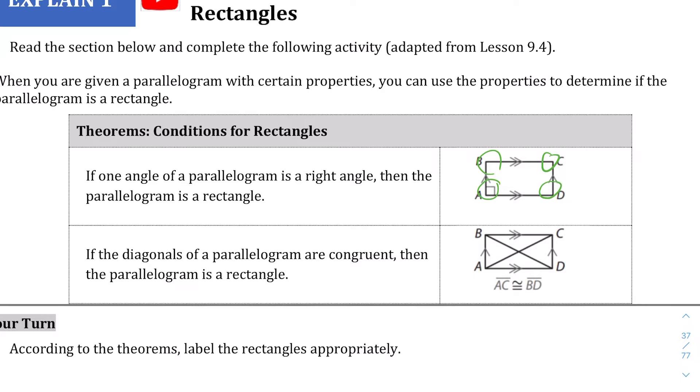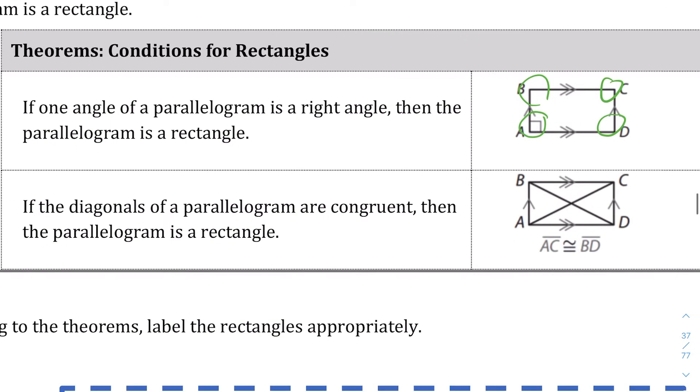The second theorem is that if you draw the diagonals and the diagonals are congruent, meaning that AC and BD are the same length, then you have a rectangle no matter what.